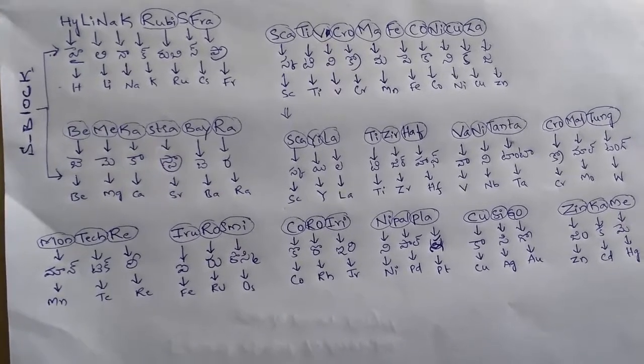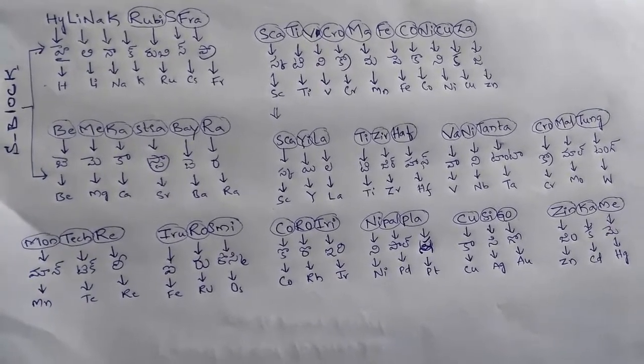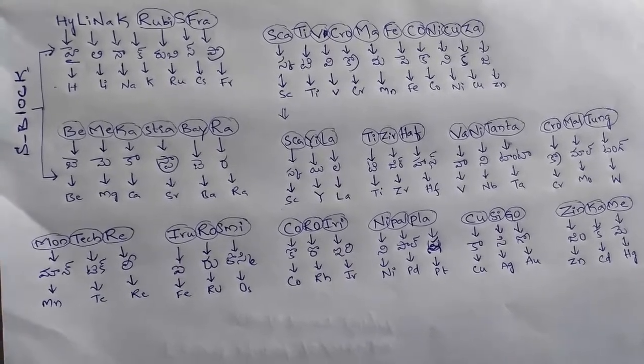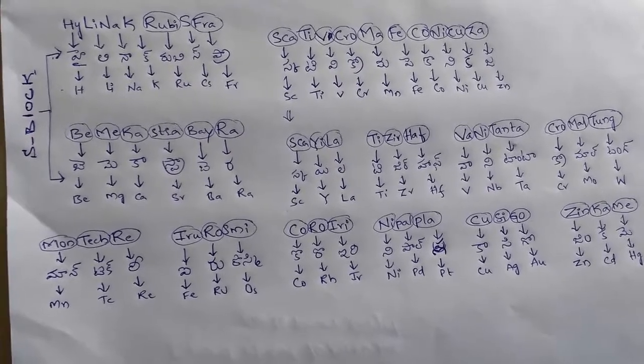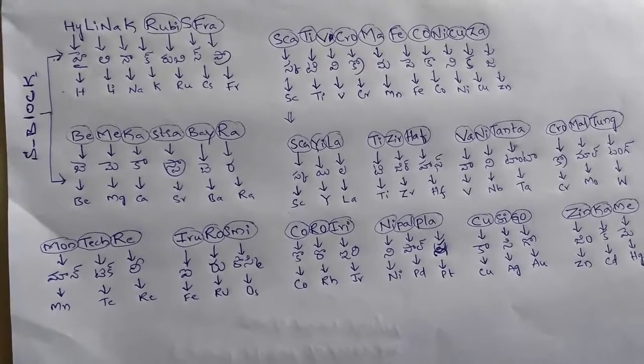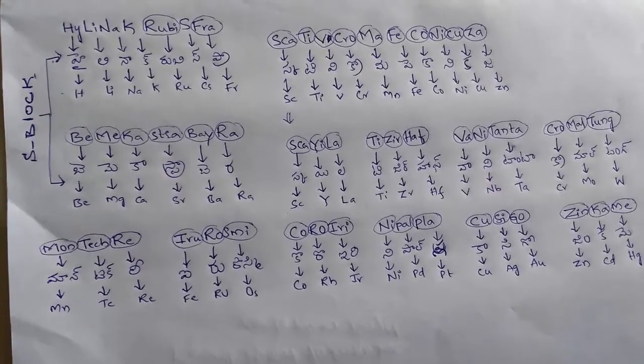Next, if you go to the d-block elements: scandium, titanium, vanadium, chromium, manganese, ferrous, cobalt, nickel, copper, zinc. How to pronounce in a tricky method? Scativic chroma feconica za. Once again, scativic chroma feconica za.